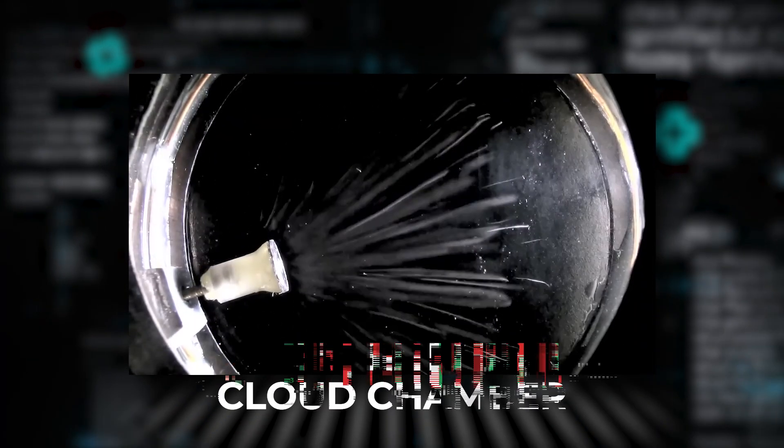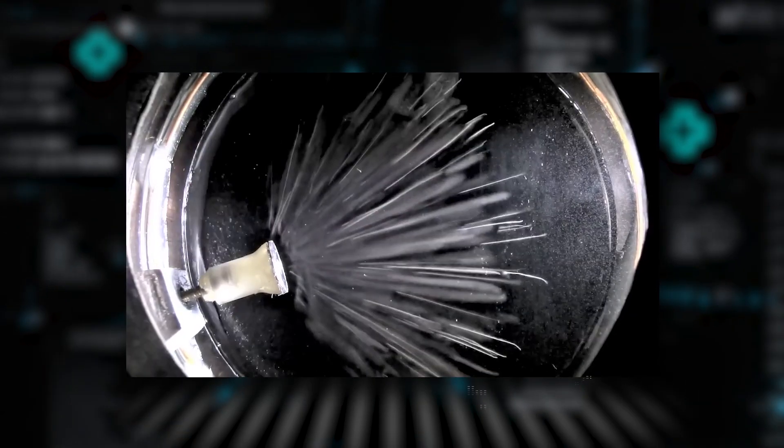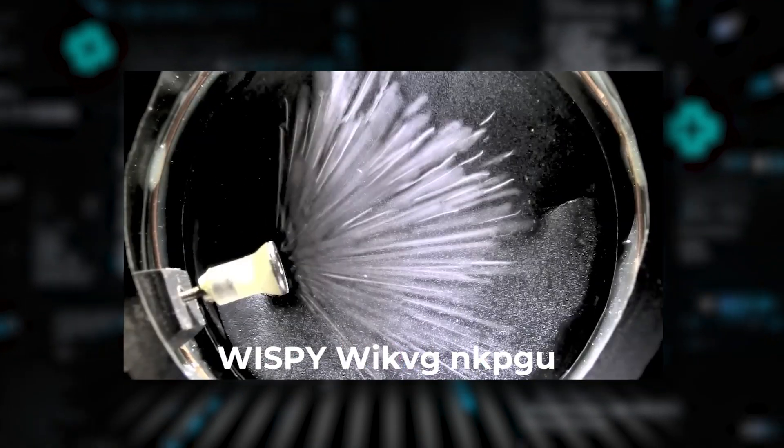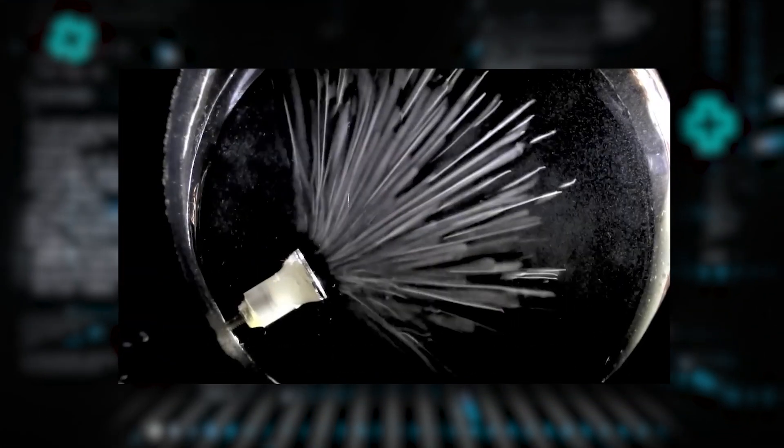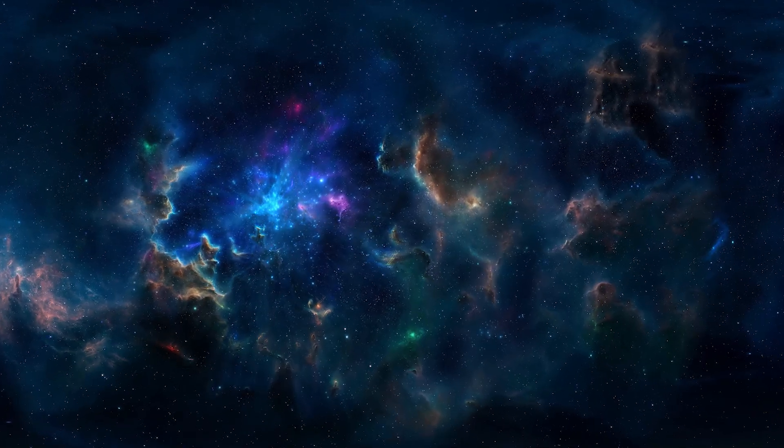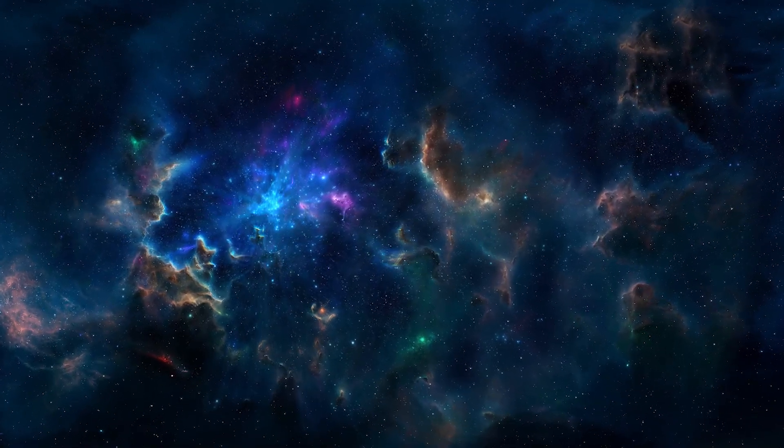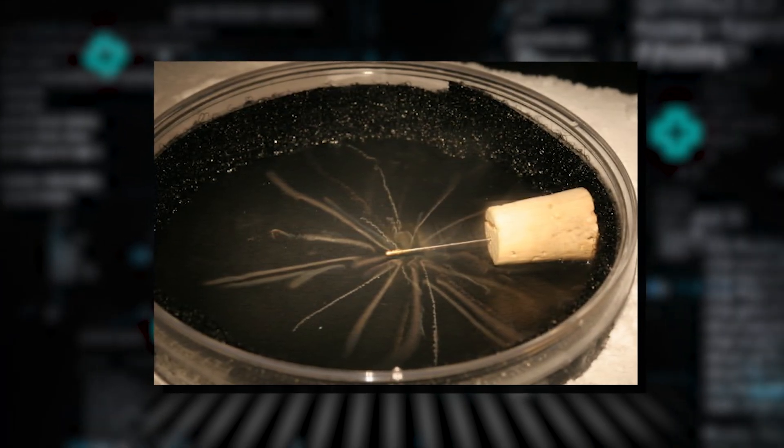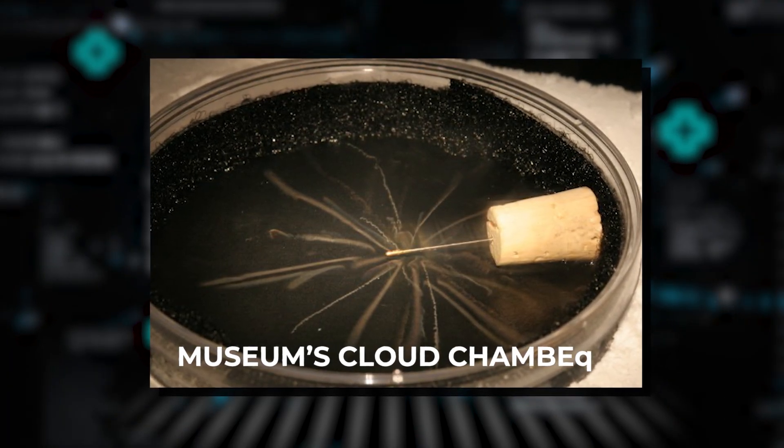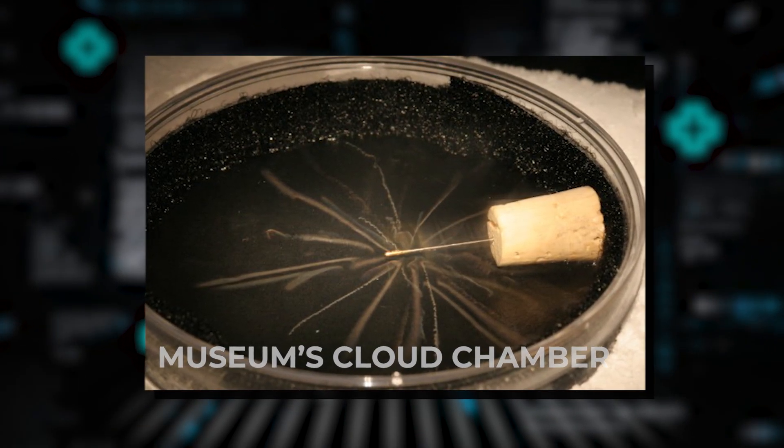If you've ever seen a cloud chamber in a science museum, the tracks left by cosmic rays look like wispy white lines, similar to tiny jet-con trails. Cosmic rays have different energy levels, with the least energetic being the most common. These are the ones Hess detected and are likely to be seen in a museum's cloud chamber.